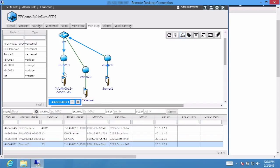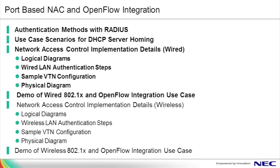This concludes our demo illustrating how Windows and Linux users may be integrated with 802.1X and programmable flow for enhanced network access control. To recap, in this video we covered different authentication methods available via RADIUS, use case scenarios for DHCP server homing, the network access control implementation details for the wired scenario, as well as a demo of the wired scenario showing the 802.1X and OpenFlow integration for both a Windows and Linux host. We look forward to seeing you in the next video where we'll cover the same options for a wireless scenario.